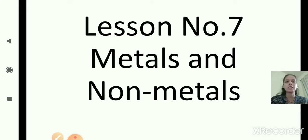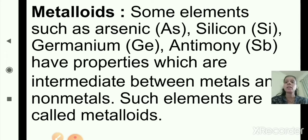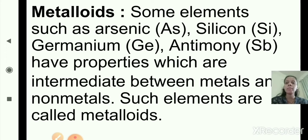Now the next part is metalloids. Some elements such as arsenic (As), silicon (Si), germanium (Ge), and antimony (Sb) have properties which are intermediate between metals and non-metals. Such elements are called metalloids — elements which show the properties of both metals and non-metals.